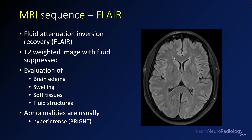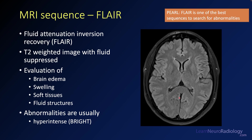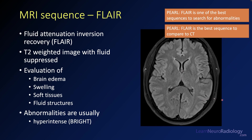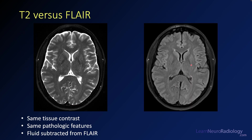On FLAIR you'll still see brain edema, swelling, and abnormal fluid accumulation — things that are bright on T2 or FLAIR are usually abnormal. FLAIR is one of the best sequences to search for abnormalities; if you don't know a lot about MRI, you can jump directly to FLAIR and see the abnormalities best. FLAIR is also the best sequence to compare to CT: edema that is dark on CT will be bright on FLAIR. T2 and FLAIR have essentially the same tissue contrast — the white matter is slightly darker than gray matter — but the fluid has been subtracted from FLAIR, making it easier to see pathologic features.